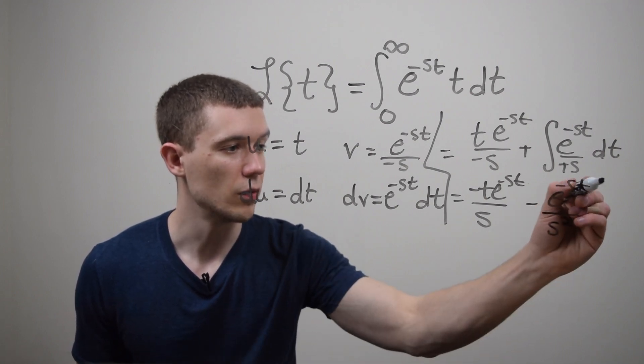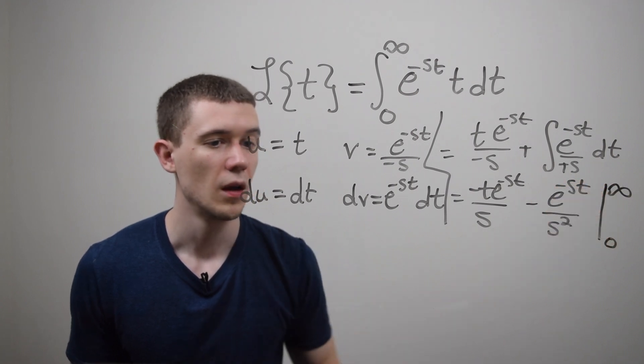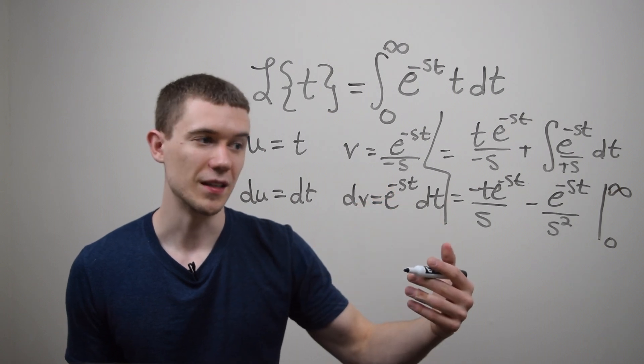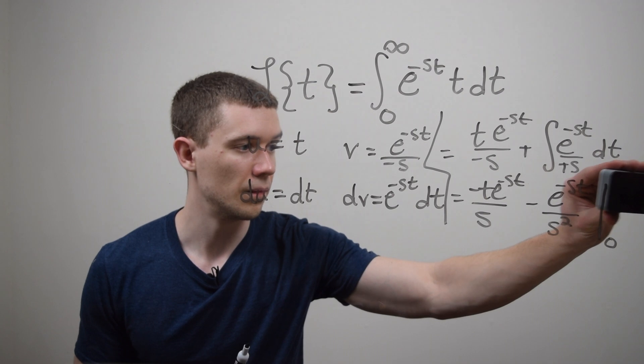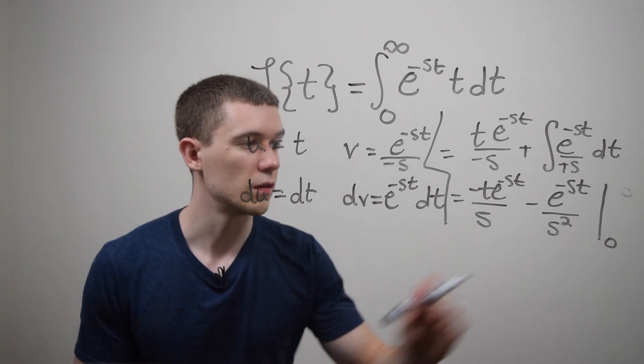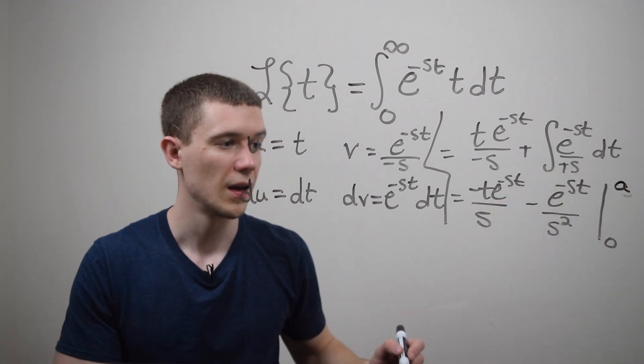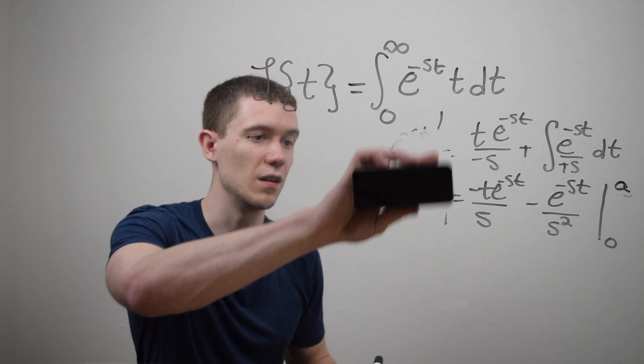And I have to evaluate this thing from zero to infinity. But if you remember how improper integrals work we need to actually take a limit of this thing. So instead of this I'm going to use a different letter. Let's just call it a and I'll say the limit as a goes to infinity.